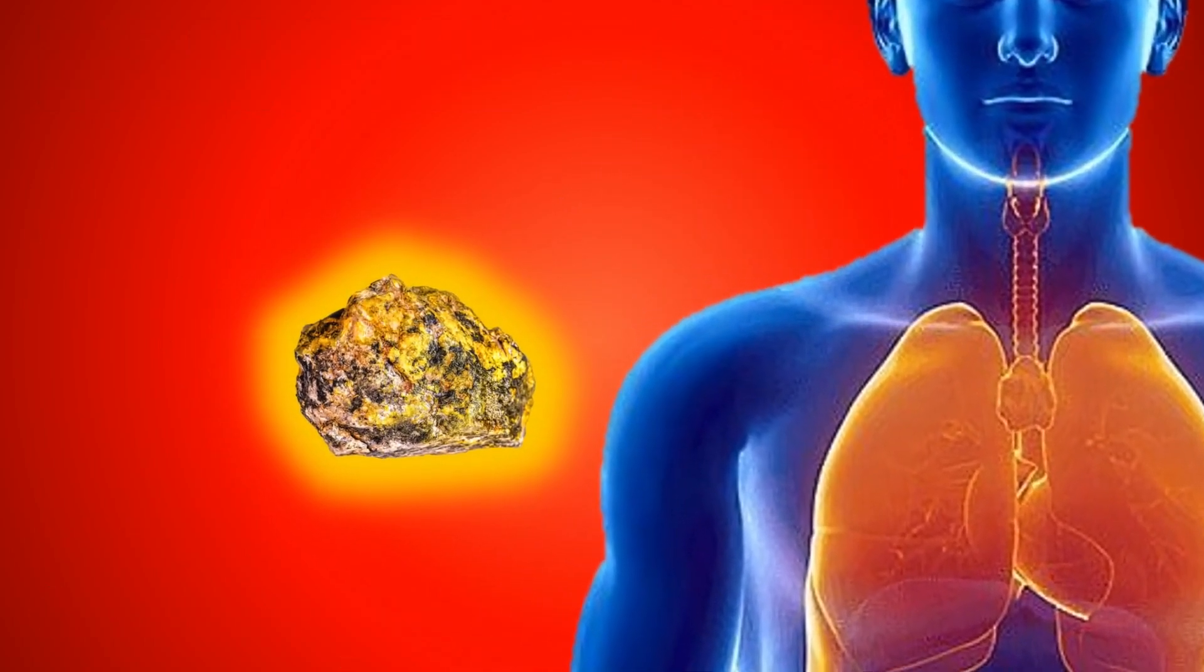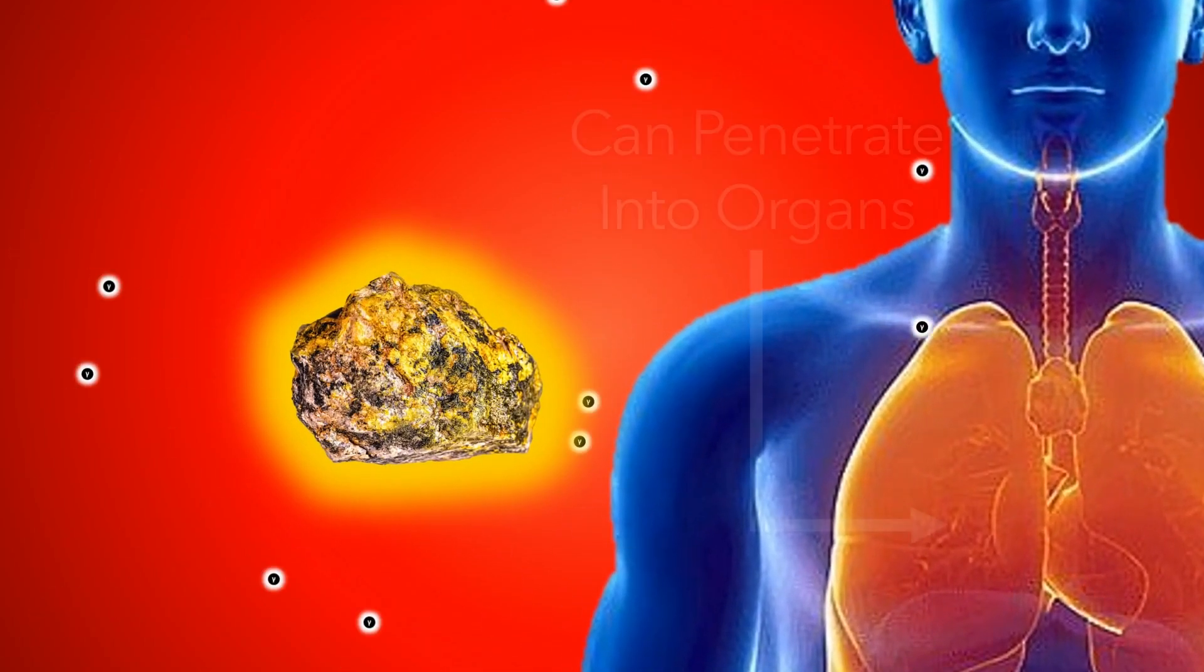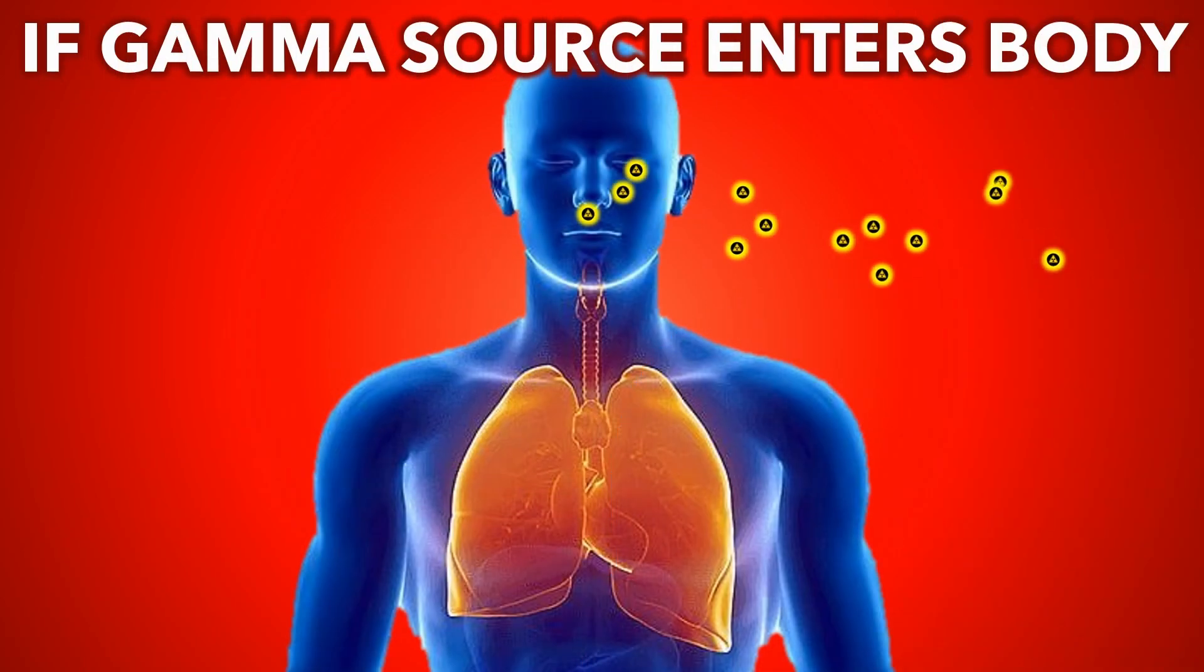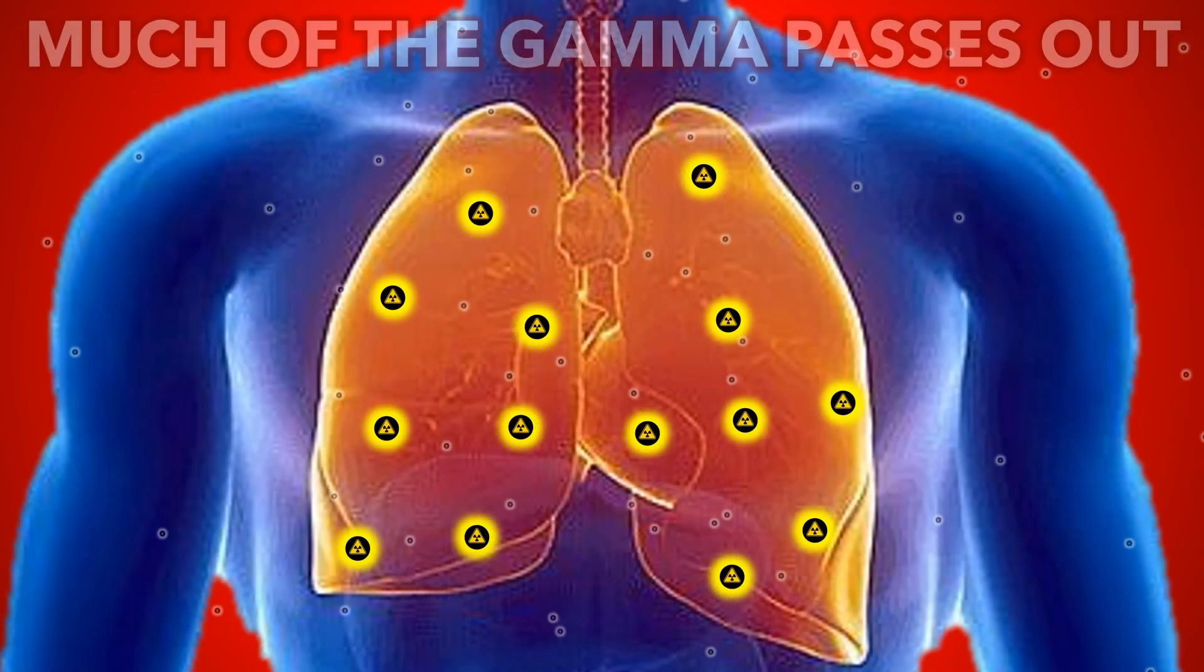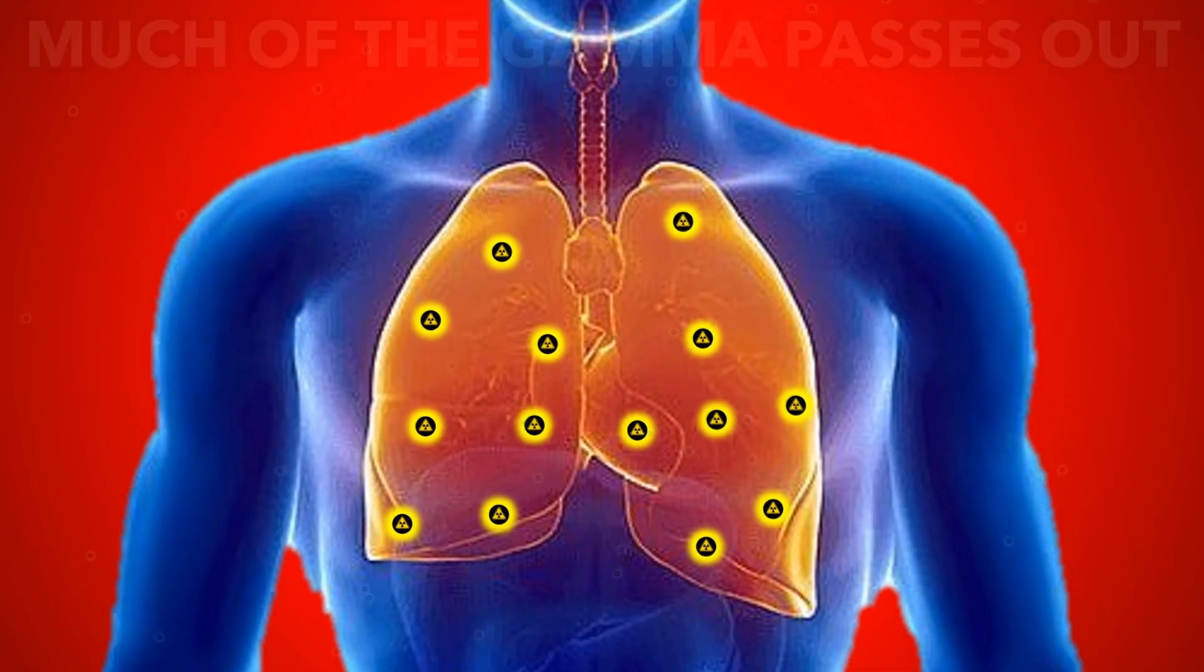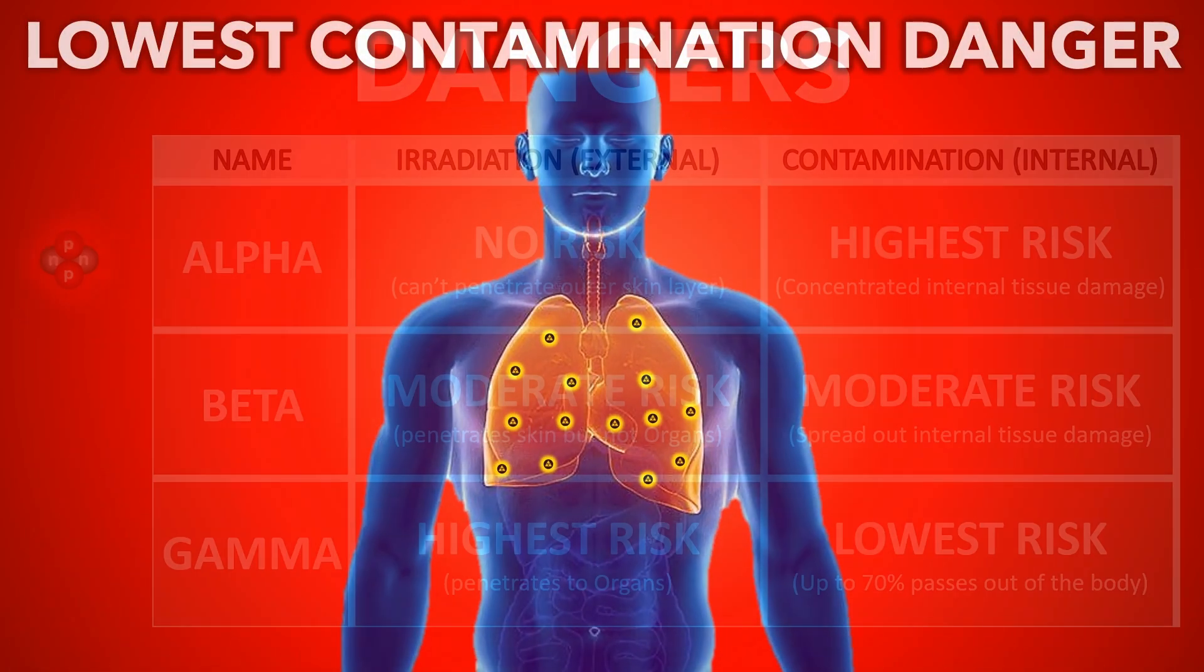Finally, gamma danger. Gamma can penetrate deep into organs, giving it a high irradiation danger. However, from inside the body, because gamma is most penetrating, most of the gamma passes out of the body, giving it the lowest contamination risk.